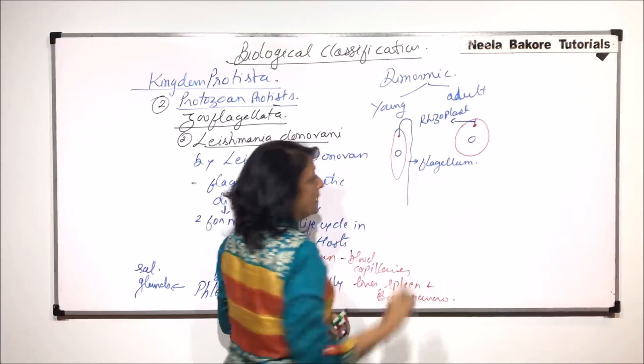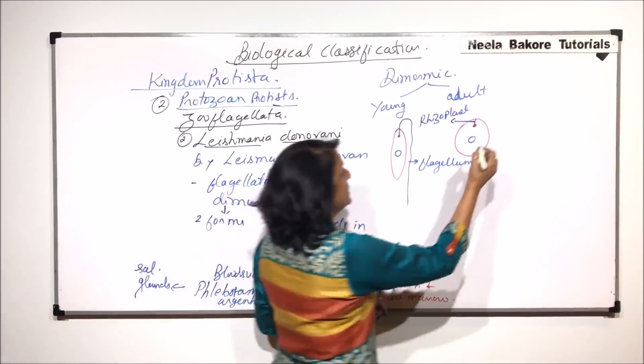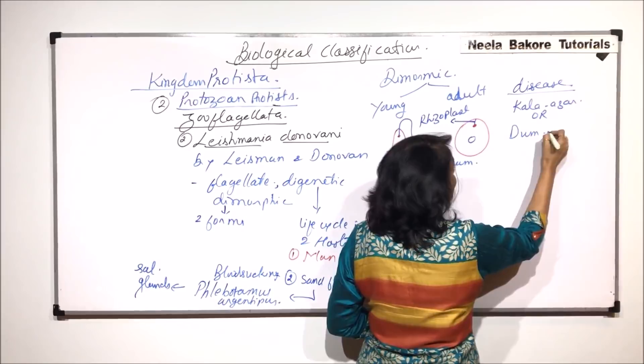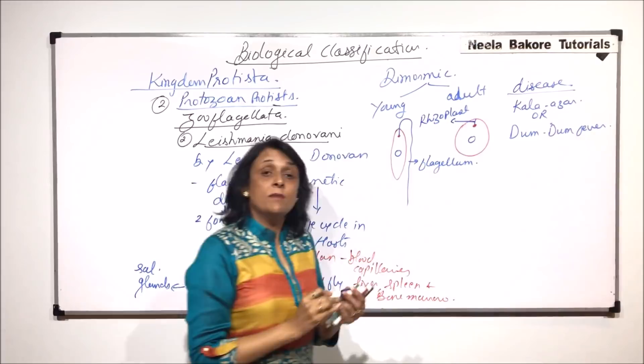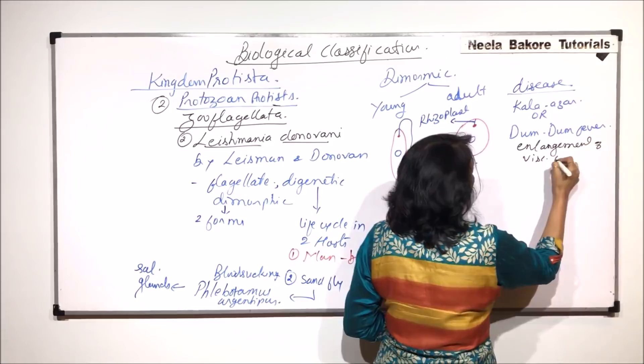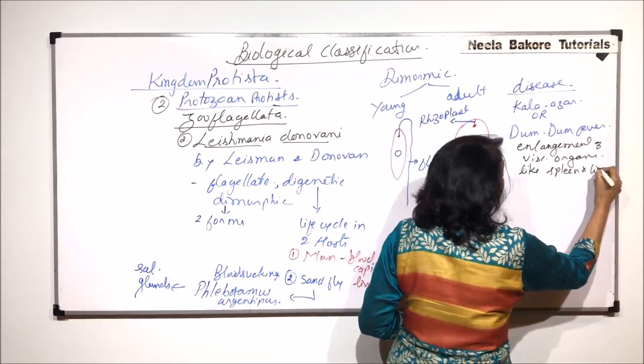Now what exactly happens when this pathogen is found in the blood capillaries? It results into a disease. The disease is known as Kala Azar or it is also known as Dum Dum fever. In this, the symptom is enlargement of visceral organs like spleen and liver.